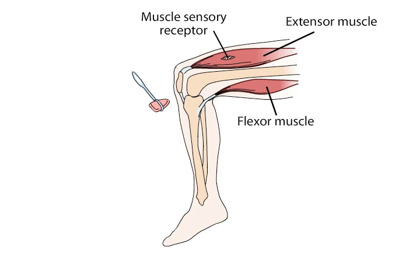The monosynaptic reflex arc is variously referred to as the stretch, deep tendon, or myotatic reflex, and it is the basis of the knee, ankle, jaw, biceps, or triceps response tested in a routine physical examination. These reflexive responses are too rapid for involvement of the brain and are mediated by the local circuitry within the spinal cord.